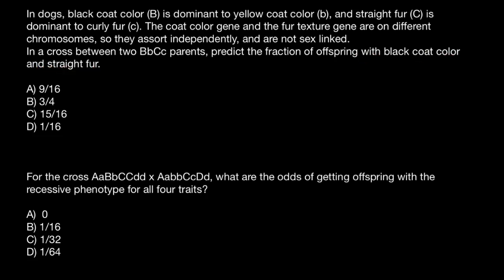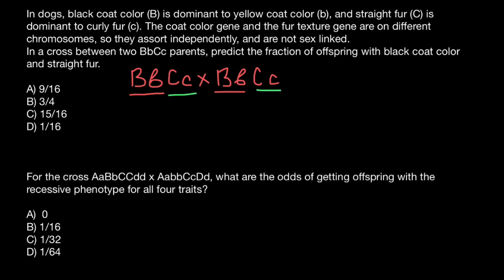The genotype of parent one is going to be capital B, small b, capital C, small c. And the genotype of the second parent also has to be the same: capital B, small b, capital C, small c. Here we have gene B and we also have gene C — not four genes, two genes.